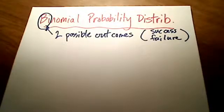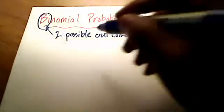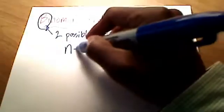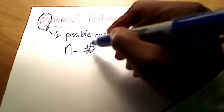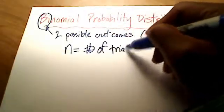So there is going to be a set number of trials, and I'm going to talk about that in just a second. But the set number of trials is represented by the lowercase n - number of trials.